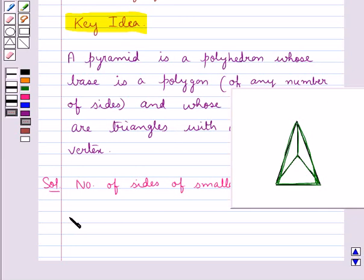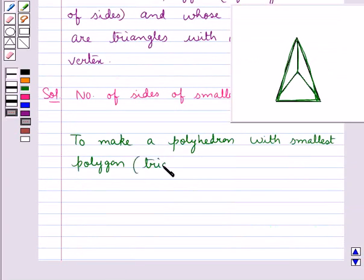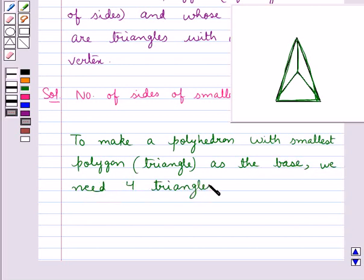To make a polyhedron with the smallest polygon, that is a triangle as the base, we need four faces, as you have seen in the case of this pyramid.